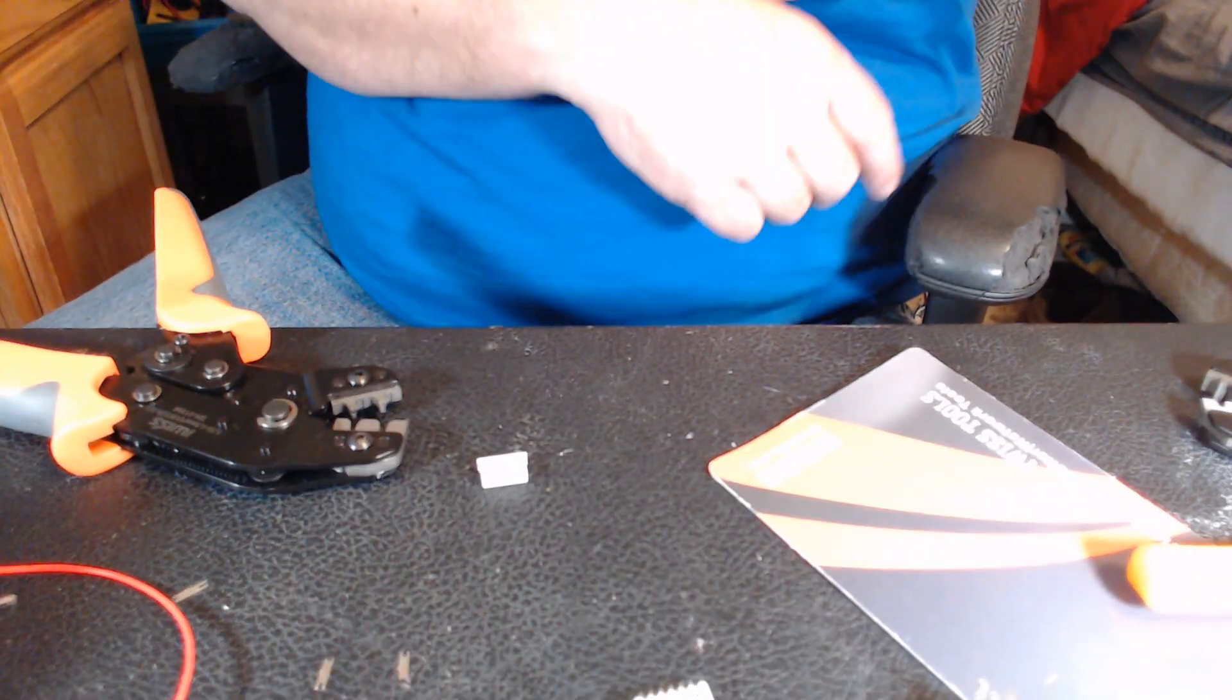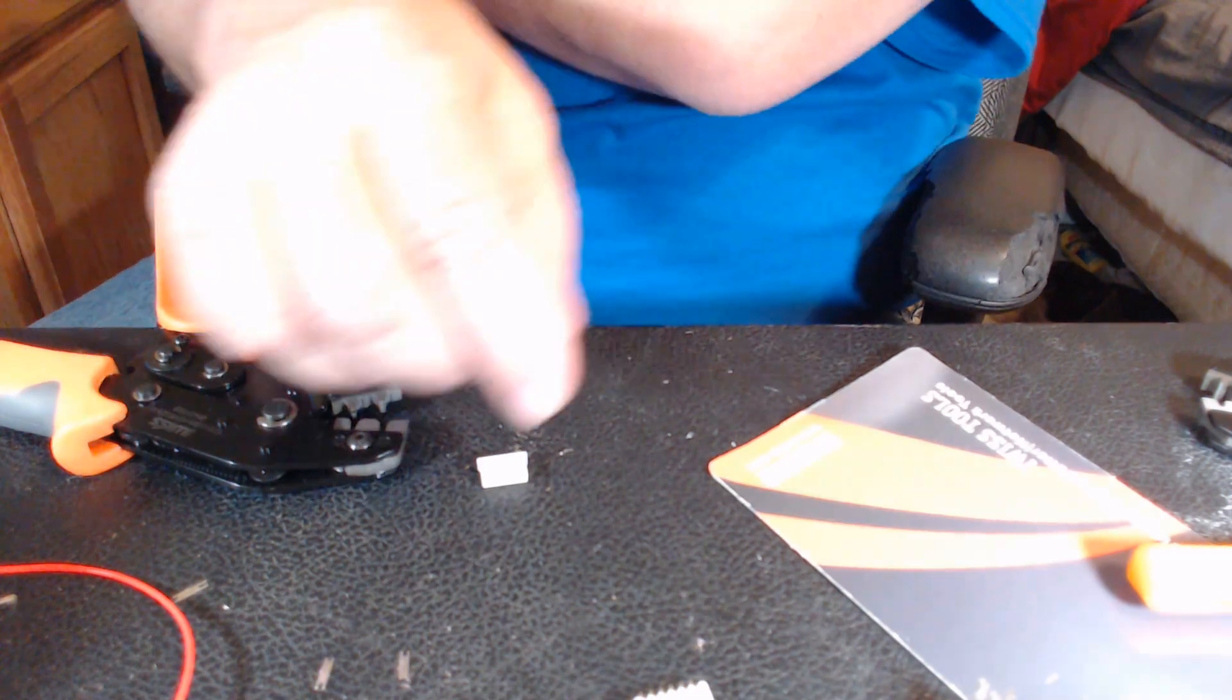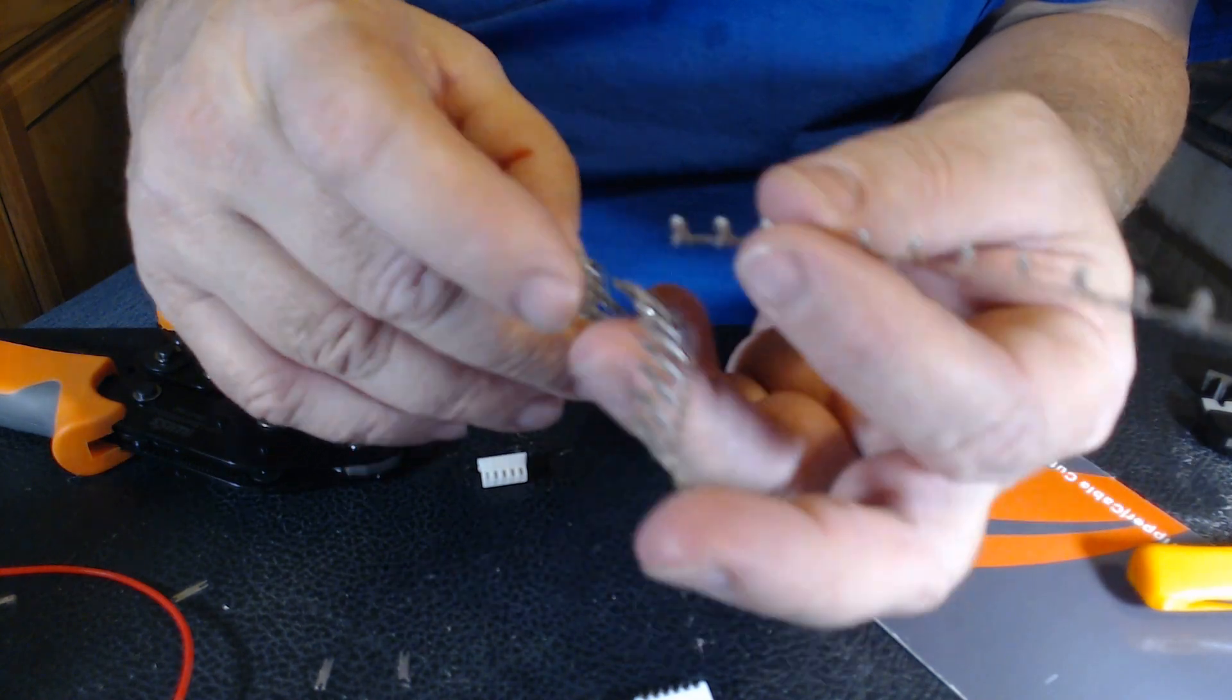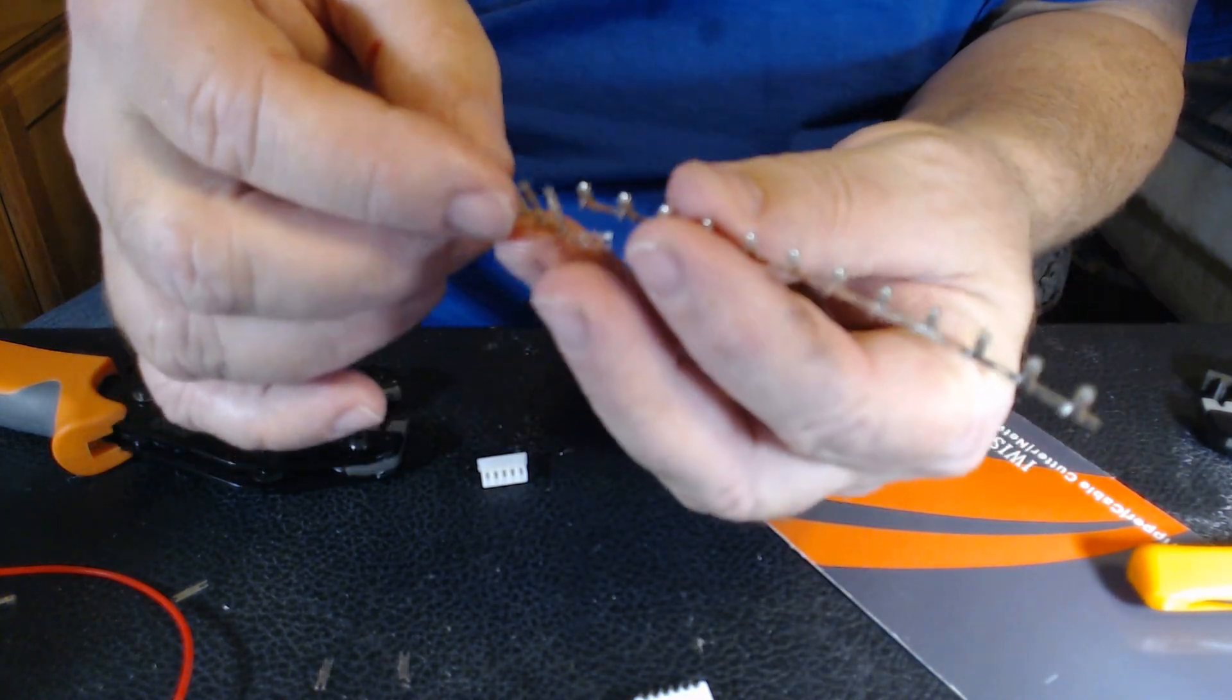So, here's how you go about it. You grab your little JST connectors, and compared to the Duponts, they are short. Here's the Duponts right here. And there's JST.